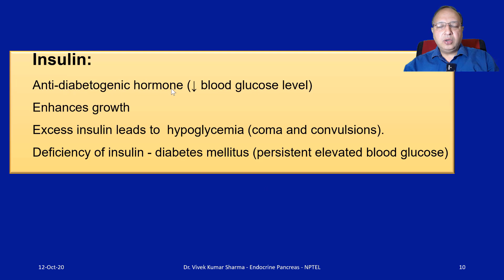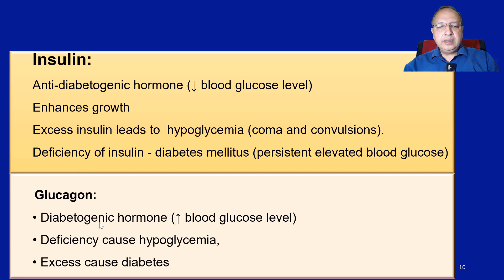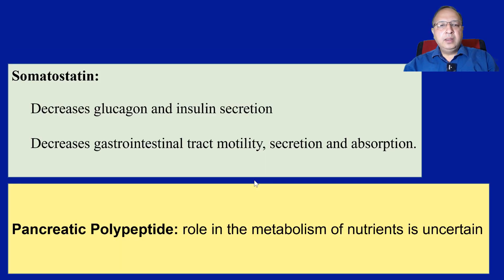Insulin is an anti-diabetogenic hormone — it causes a decrease in blood glucose level and also enhances growth. Excess insulin leads to hypoglycemia, which may cause convulsions, and deficiency of insulin — diabetes mellitus — leads to persistently elevated blood glucose, one of the most common endocrine disorders worldwide. Glucagon is the diabetogenic hormone; its deficiency causes hypoglycemia, while excess glucagon is involved in the pathophysiology of diabetes. Somatostatin inhibits the release of both glucagon and insulin and decreases GI motility, secretion, and absorption. Pancreatic polypeptide plays a role in GIT regulation.